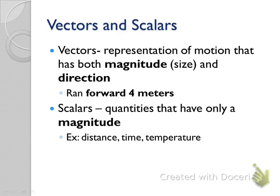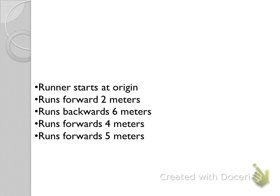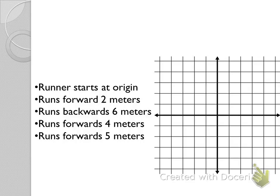Why can't distance have a direction? When I walked around the room, I went in multiple directions — north, east, south, west — all four. So in my final distance I couldn't have a single direction because I went all four of them. But my displacement, I could tell exactly how far I ended up from where I started. Distance, time, and temperature do not have any direction.